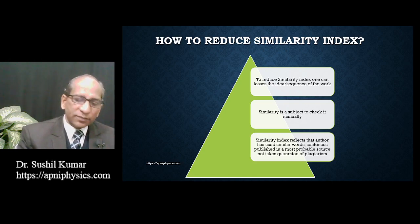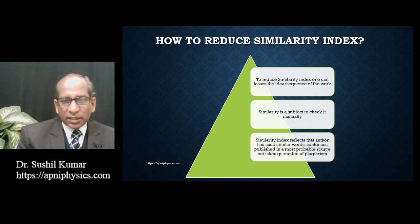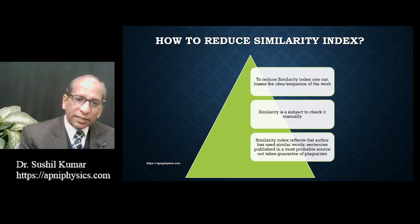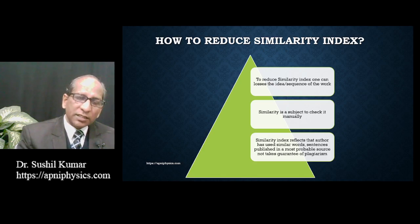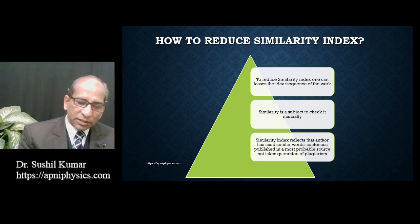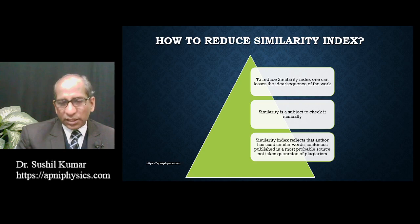Similarity index reflects that the author has used similar words and sentences published in a most probable source — it does not guarantee plagiarism. This is the most probable case. The software suggests the most probable source but never tells you the content or idea was directly copied and pasted. You can make a range of what is okay and what is not okay, but on the basis of that range alone you can never define the content as plagiarized without manual checking.